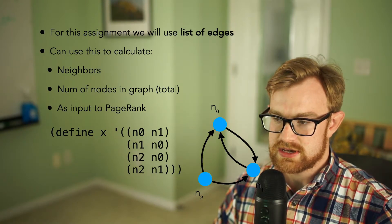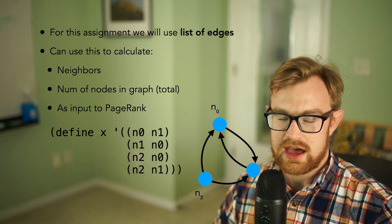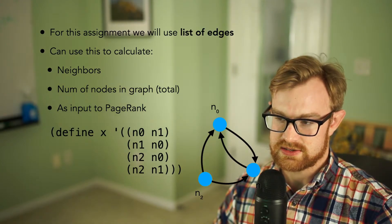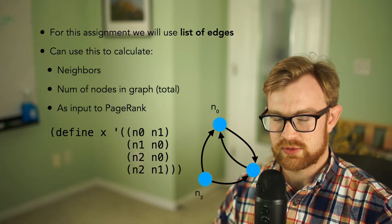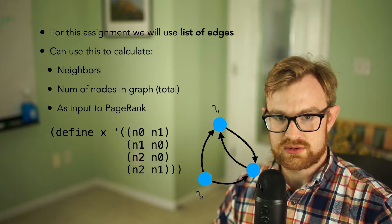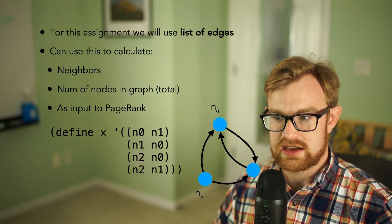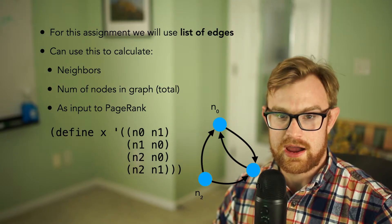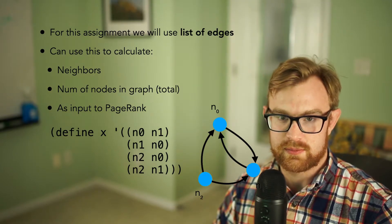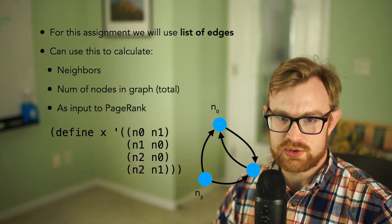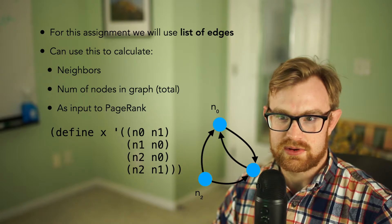For this assignment we're going to represent graphs by a list of edges. We can use this to calculate things like neighbors — which nodes map to which other ones — and also the total number of nodes in the graph. This will be the input to our PageRank algorithm.